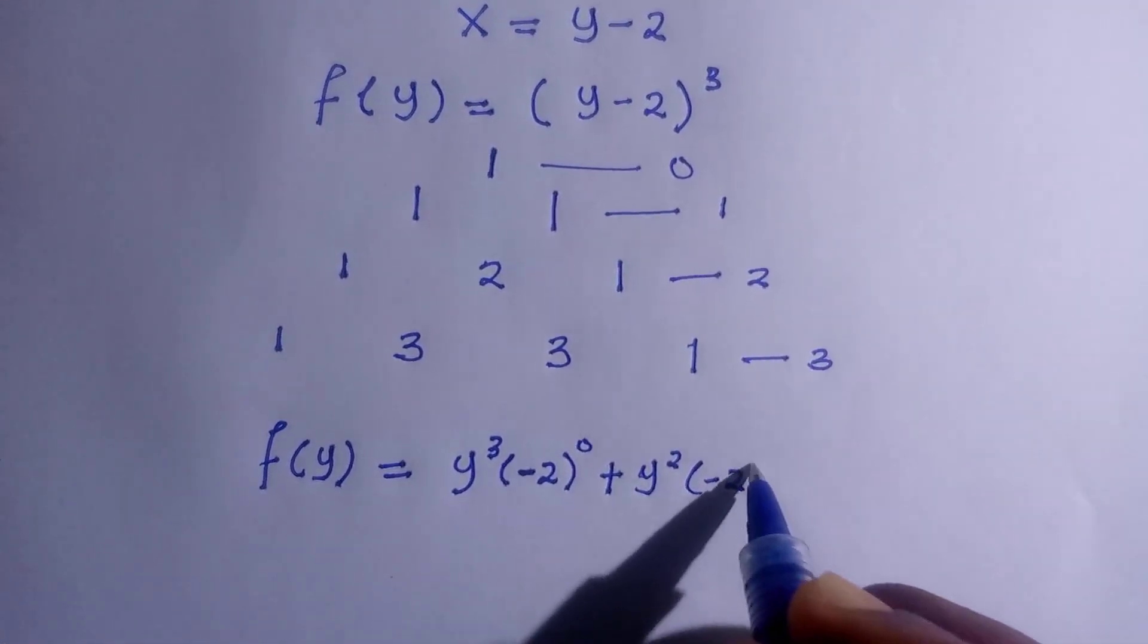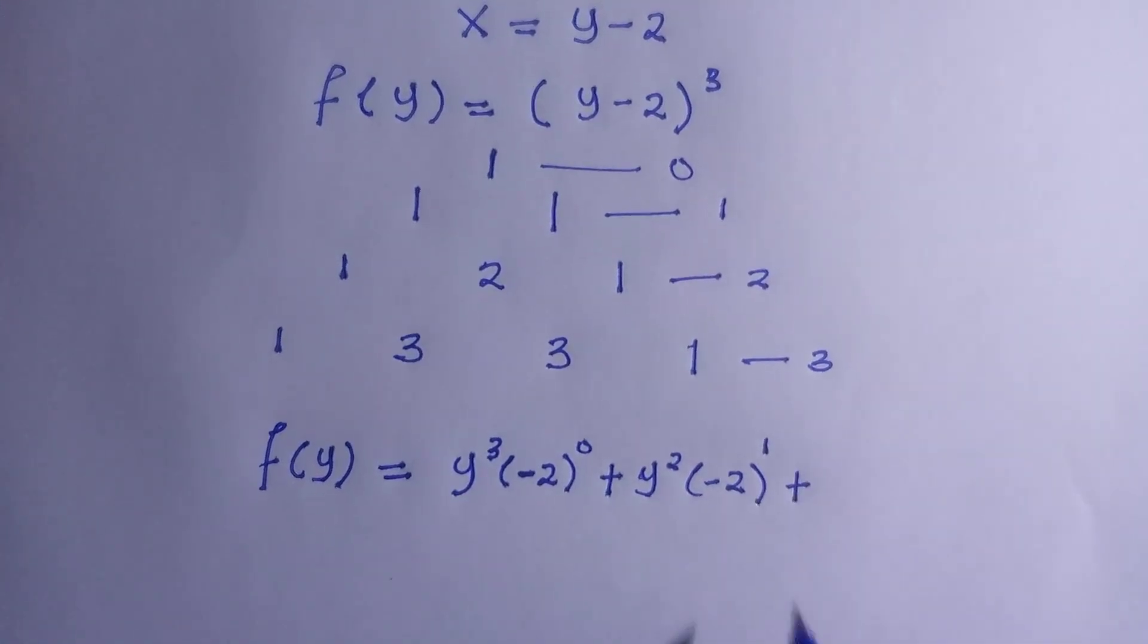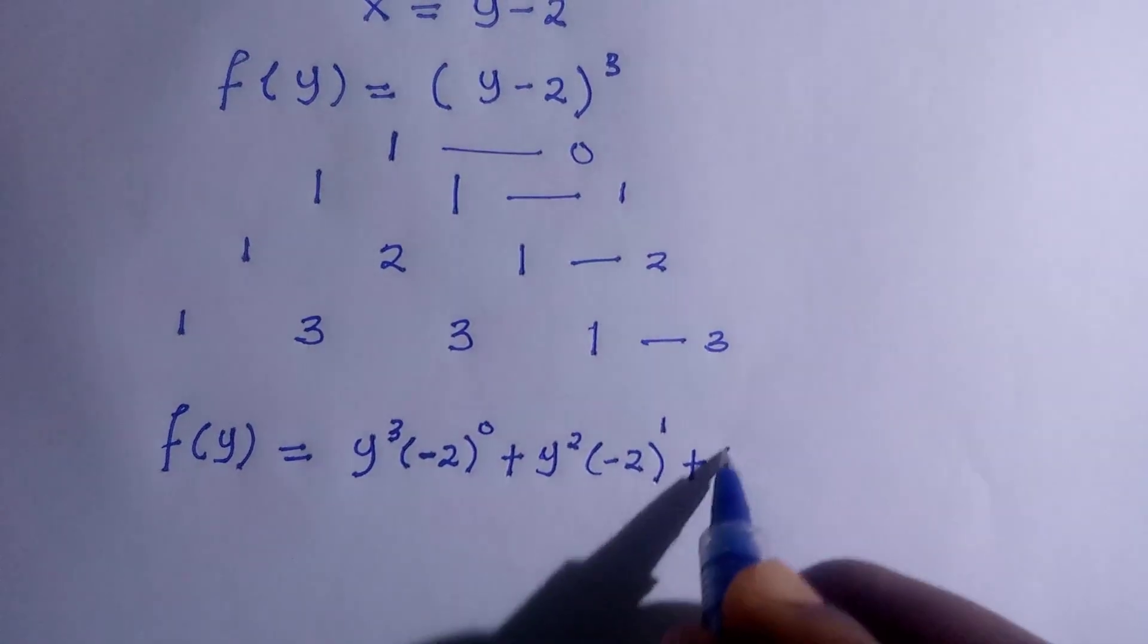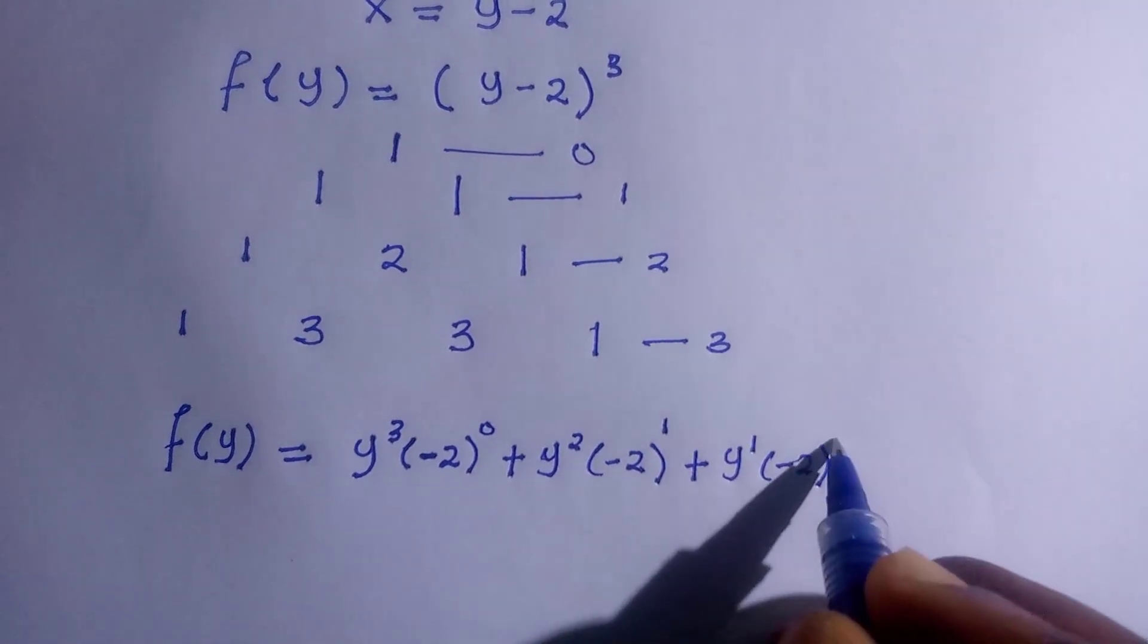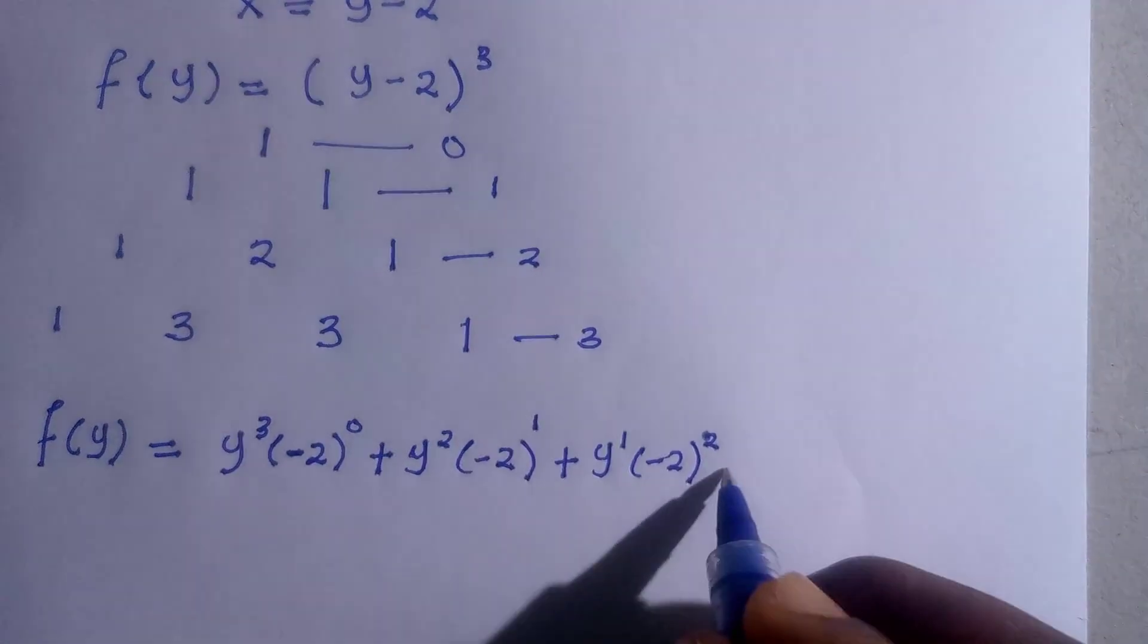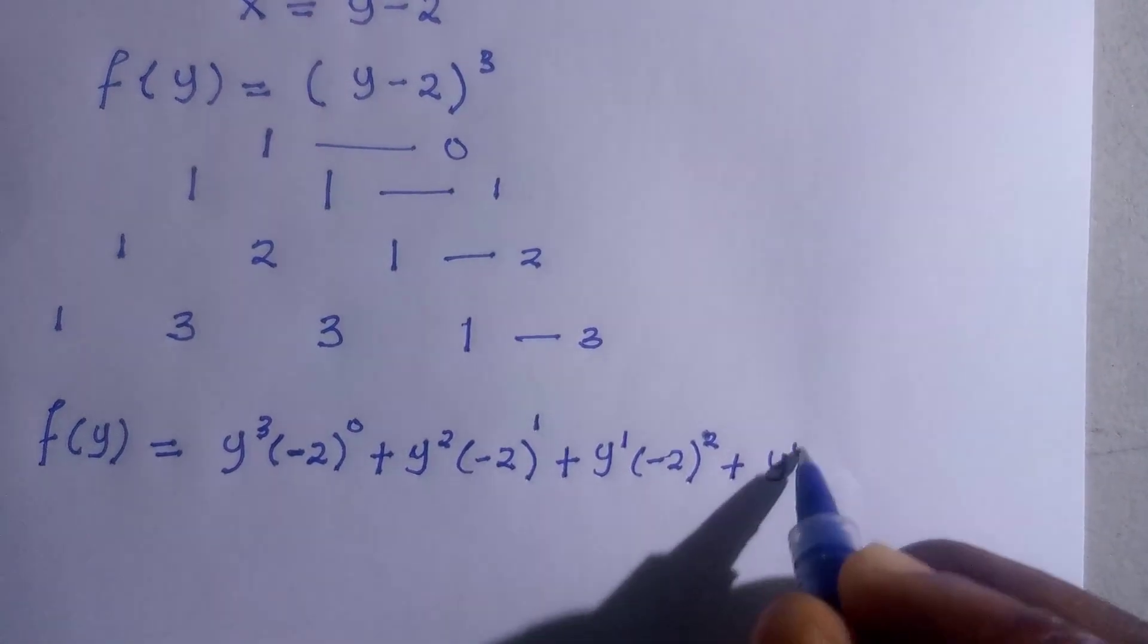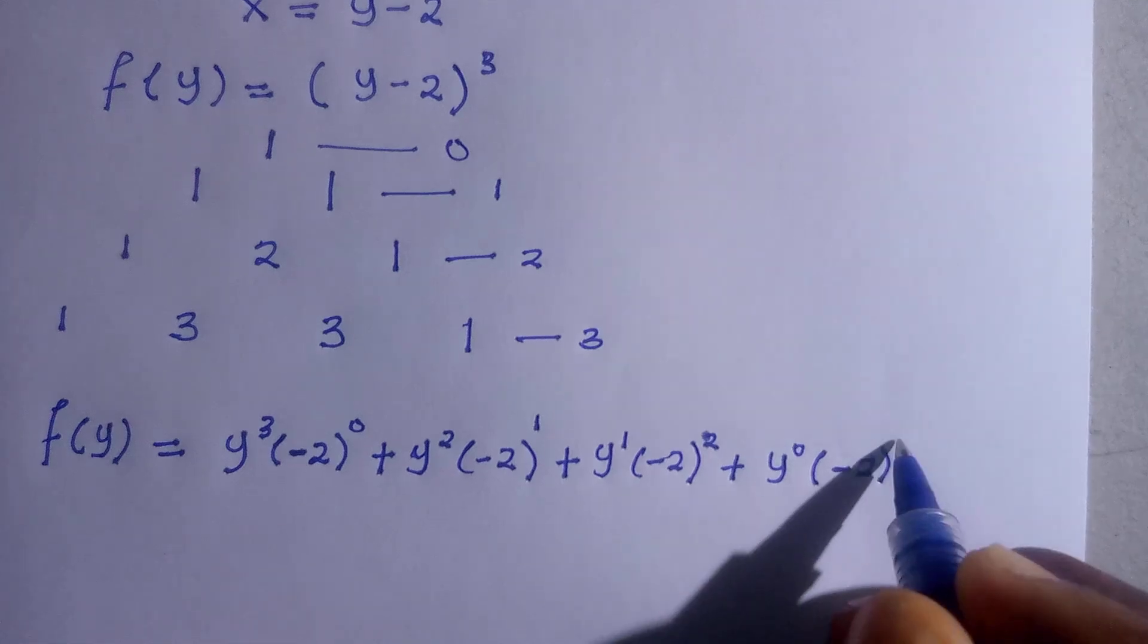then minus 2 to the power of 1, plus y to the power of 1, minus 2 to the power of 2. And lastly, we have plus y to the power of 0, and minus 2 to the power of 3.